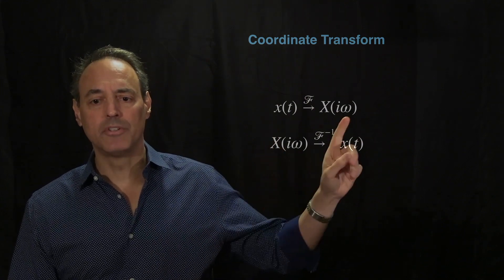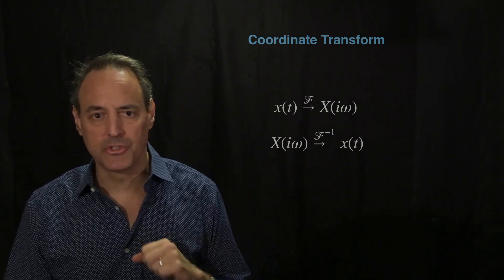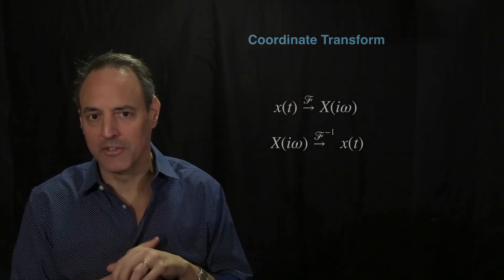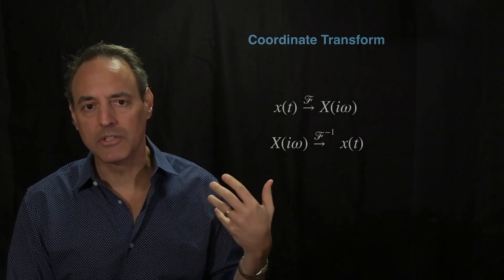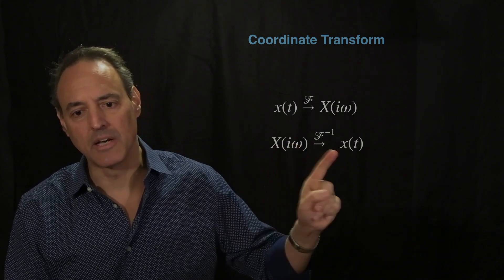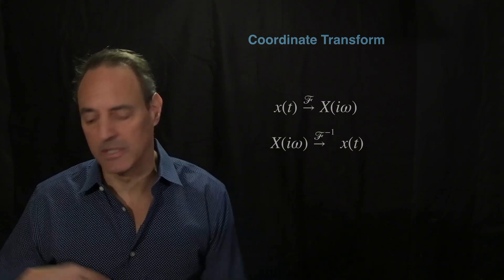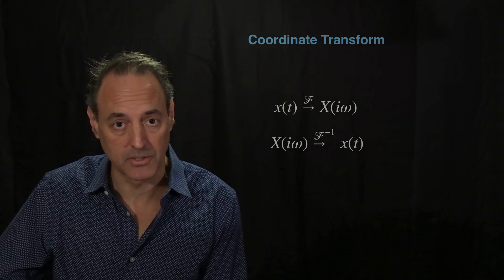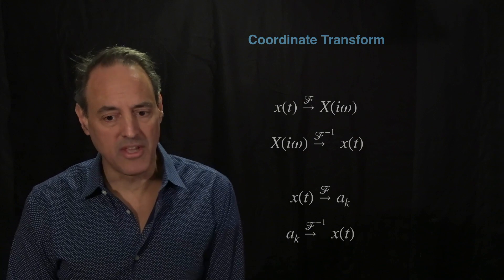What will happen a lot for us is we'll move into the Fourier domain, manipulate the signal there, and then come back out. It's not just going in and coming back with nothing having happened — once we're in the Fourier domain we can do manipulations and start to understand basic signal processing tricks, then come back out with a new signal that has advantageous properties.